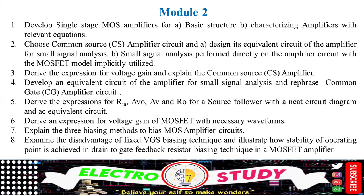Explain the three biasing methods for a biased MOS amplifier circuit. Examine the drawback of fixed VGS biasing technique and illustrate how the stability of the operating point is achieved in the drain-to-gate feedback resistor biasing technique in a MOSFET amplifier. This is a direct question.